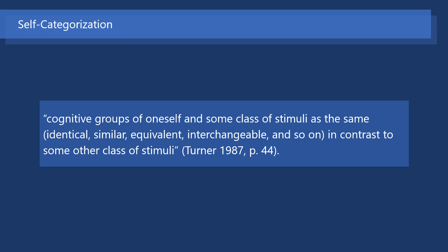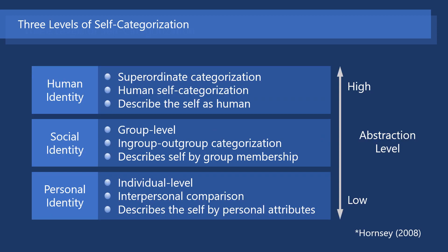Self-categorization is a particular type of social categorization. Turner defined self-categorization as cognitive grouping of oneself and some class of stimuli as the same, in contrast to some other class of stimuli. Self-categorization can be classified into three levels by the degree of abstraction: personal identity, social identity, and human identity.